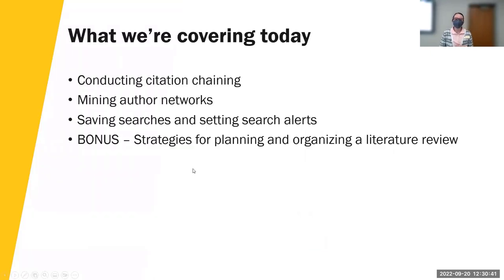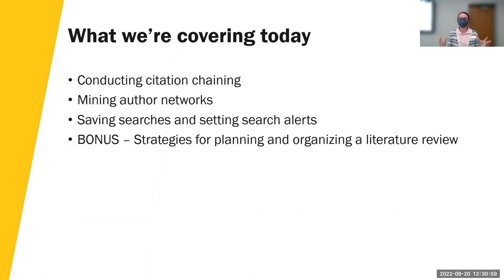So what we're going to talk about today is conducting citation chaining, mining author networks, and saving searches and setting search alerts. Those are the three tips to help you expand your literature — finding a way to make all of the searching you've done a little bit easier, helping you expand the literature you're finding without having to start thinking about more keywords or different combinations. At the end, we'll talk about some strategies for planning and organizing a lit review, recognizing that organization is very discipline specific.